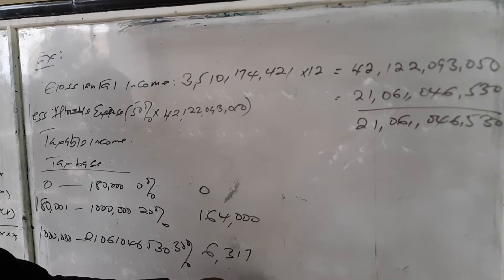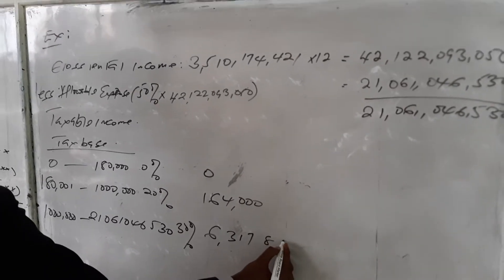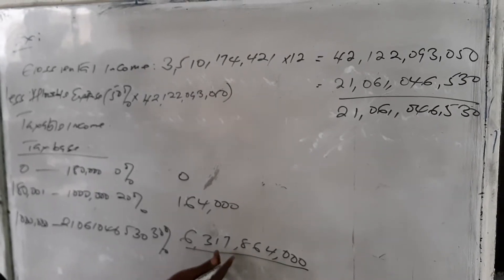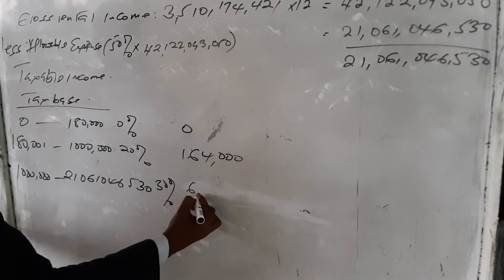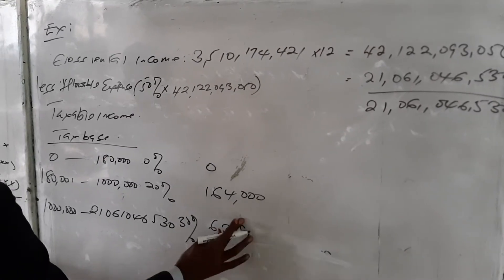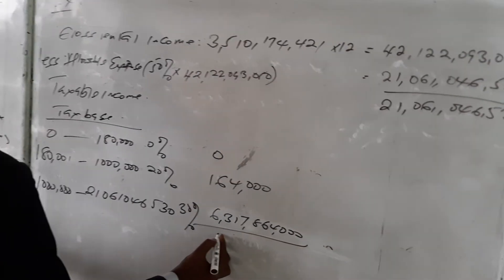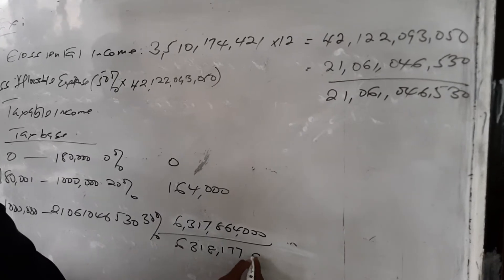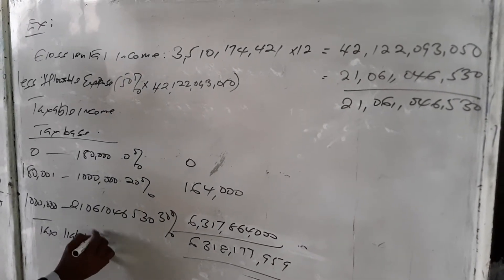Computing the total, which gives me the total tax liability of 6,318,177,959. So this is the tax liability for the first case.